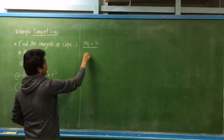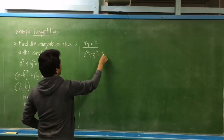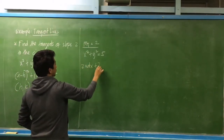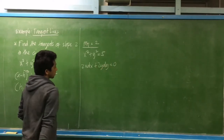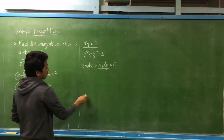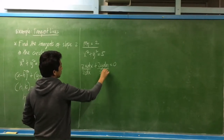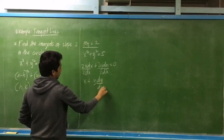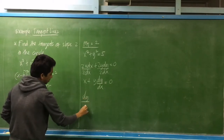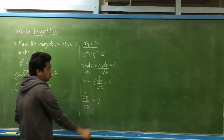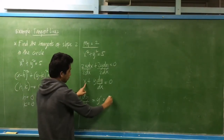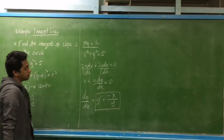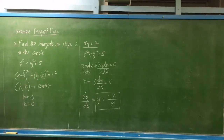We have the function of the circle: x squared plus y squared is equal to 5. Let us determine the first derivative. This is 2x dx plus 2y dy, and constant 5 gives 0. Dividing all terms by dx, we get x plus y times dy/dx equal to 0. So dy/dx, which is the same as the slope y prime, is equal to negative x over y.